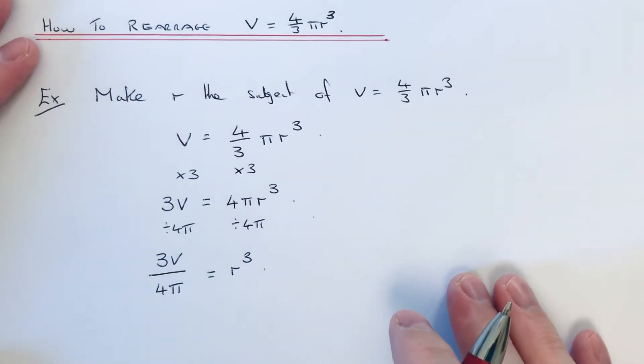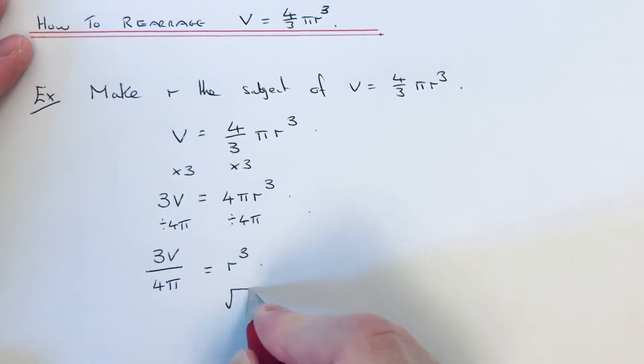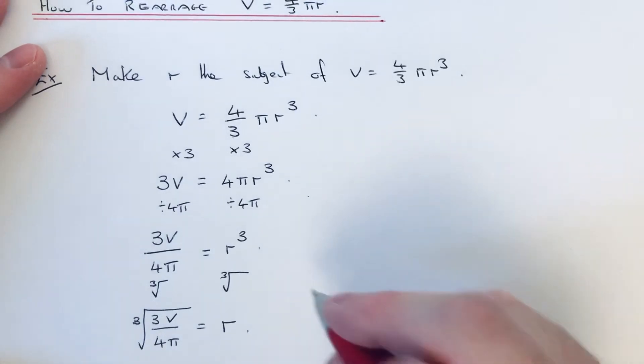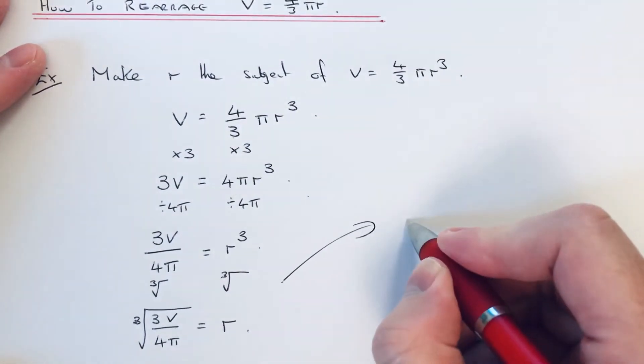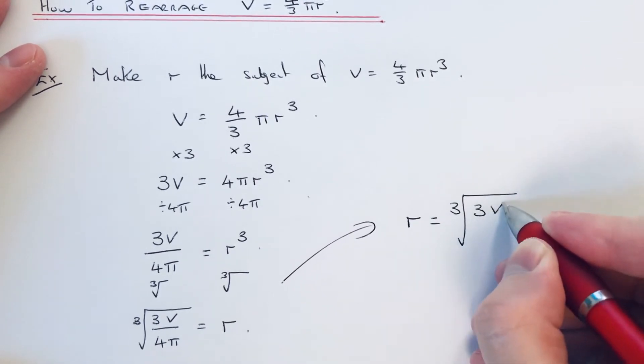And then the opposite to a cube is to take the cube root. So we just need to put this fraction underneath the cube root and that is now equal to r. So I'm just going to copy out the formula with the r on the correct side, so it's the cube root of 3V over 4π.